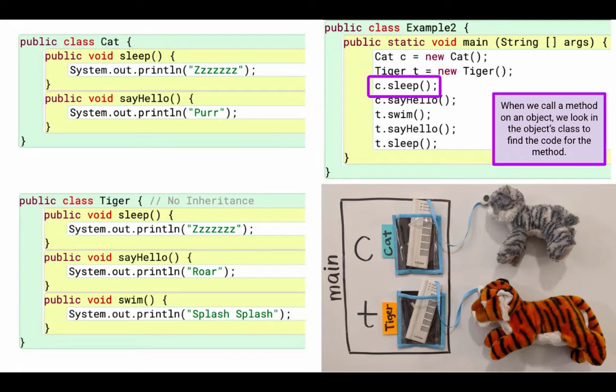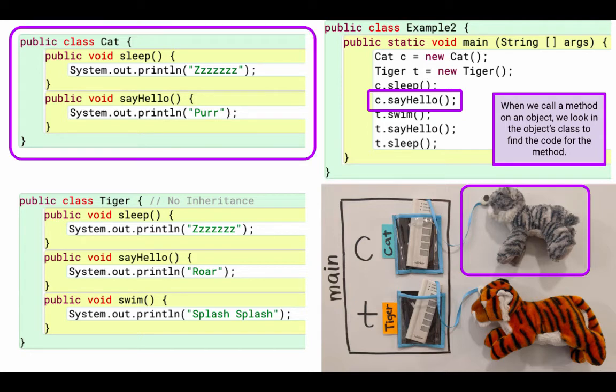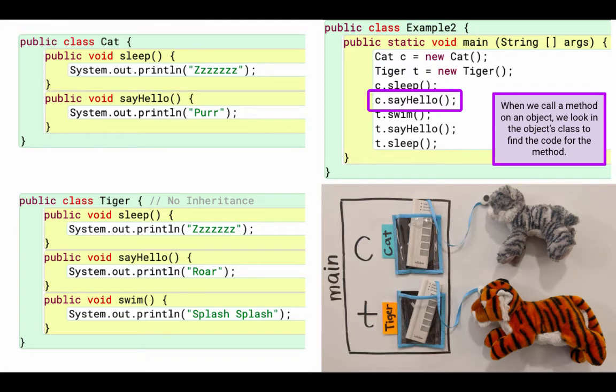Okay, we finished executing the sleep method. So we're going to go to c.sayHello. And when we call a method on an object, we look in the object's class to find the code for that method. Since we're calling this method on c, c references that cat object. So again, we're going to look in the cat class. So here we look in the cat class, and we look for the method sayHello, and we find it, prints purr. Okay, we finished c.sayHello.